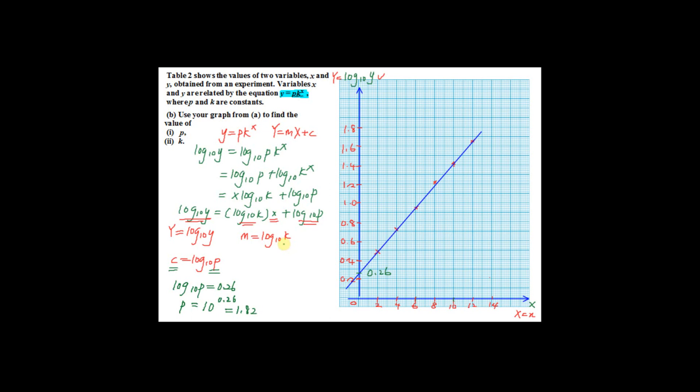To find the value of k, you have to find the gradient m. To find the gradient m, you have to choose 2 points from the graph. These are the 2 points that I choose. The first point is 10, 1.46 and the second point is 0, 0.26.